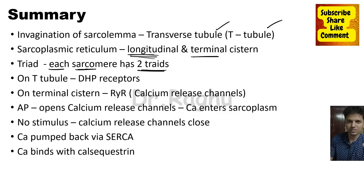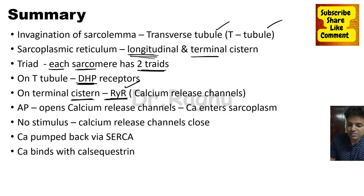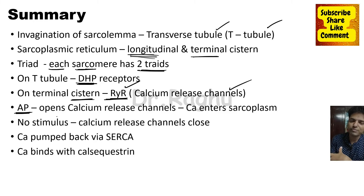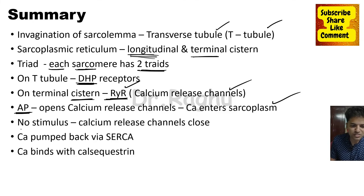On the T-tubule, at the point of close proximity with the terminal cistern, we have dihydropyridine receptors. On the terminal cistern at the same level we have ryanodine receptors, which are the calcium release channels. Once the action potential arrives at the T-tubule, a conformational change occurs in the dihydropyridine receptor, causing opening of the calcium release channels. Calcium enters the sarcoplasm, binds with troponin C, and triggers muscular contraction.